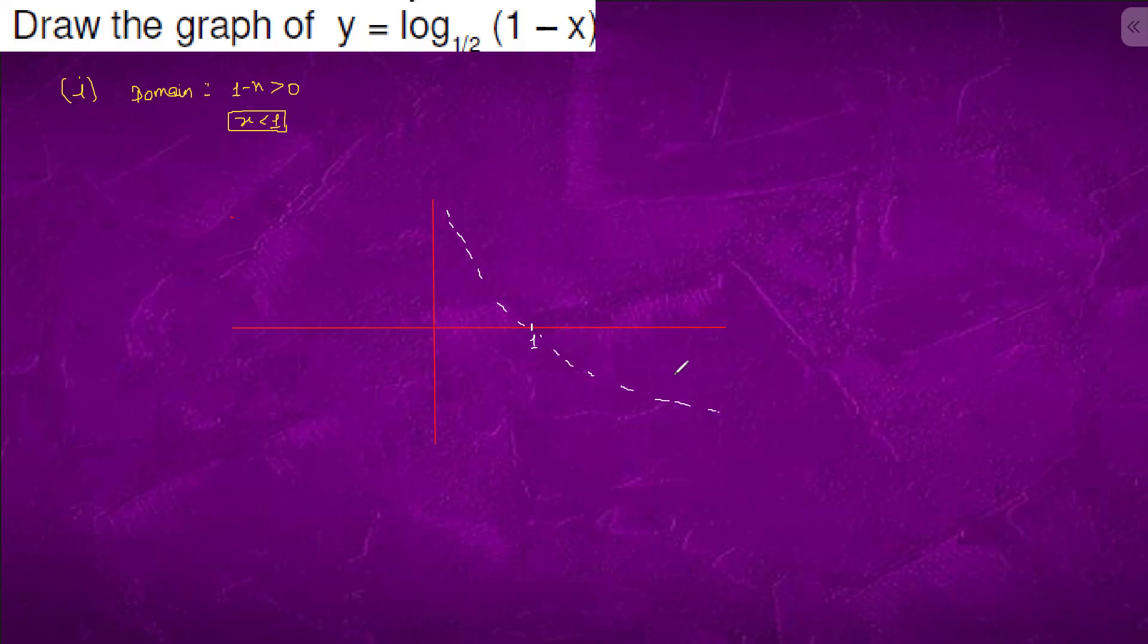Like this. So in this place, if we put x equal to 0, it will be log 1 base 1 by 2, so it will be 0.